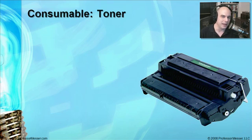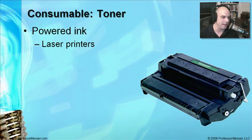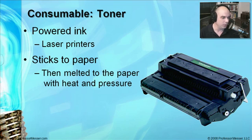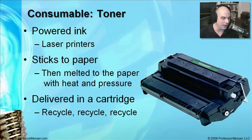One consumable you'll run into a lot, especially in enterprise environments with lots of laser printers, is toner. This is a picture of a toner cartridge — they're relatively large and bulky, and contain powdered, carbon-type ink designed for laser printers. As we discussed, the process uses that powdered ink to stick to the paper, then fuses it using heat and pressure — essentially melting the toner onto the paper. Be careful not to spill any toner; it's supposed to come out inside the printer, onto the sheet of paper.